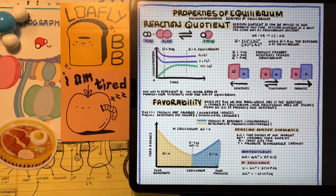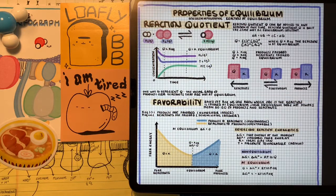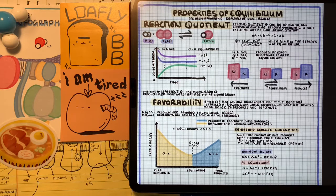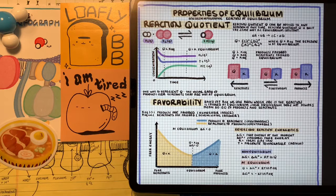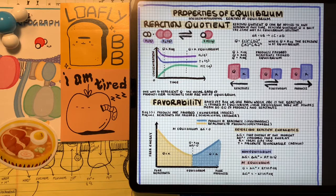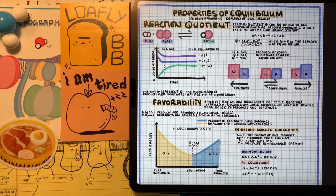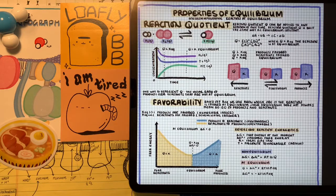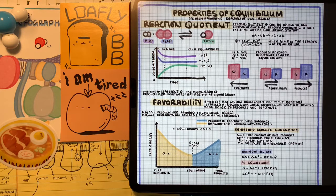This is where we introduce the idea of the reaction quotient. Now, the reaction quotient is solved the same way as the equilibrium constant. We have products over reactants raised to their coefficients. But the difference between the reaction quotient and the equilibrium constant is that we're going to use the reaction quotient when we don't know whether or not the reaction is at equilibrium or when the reaction is not at equilibrium. Because the relationship between Q and the equilibrium constant, KEQ, is really important for helping us understand what's going on with the reaction.